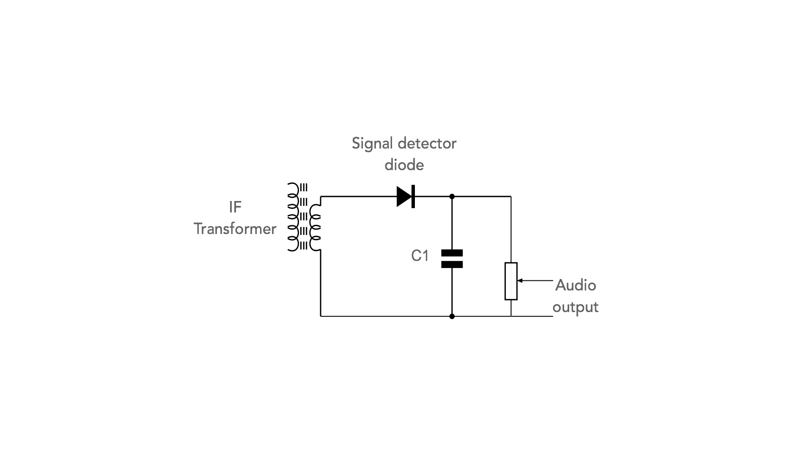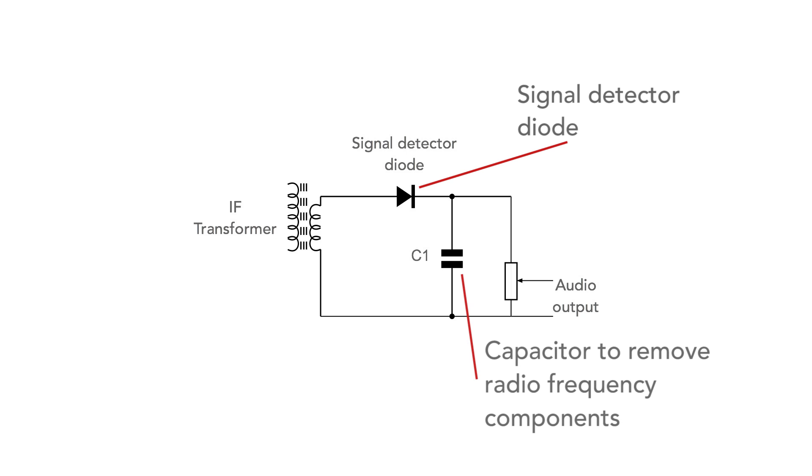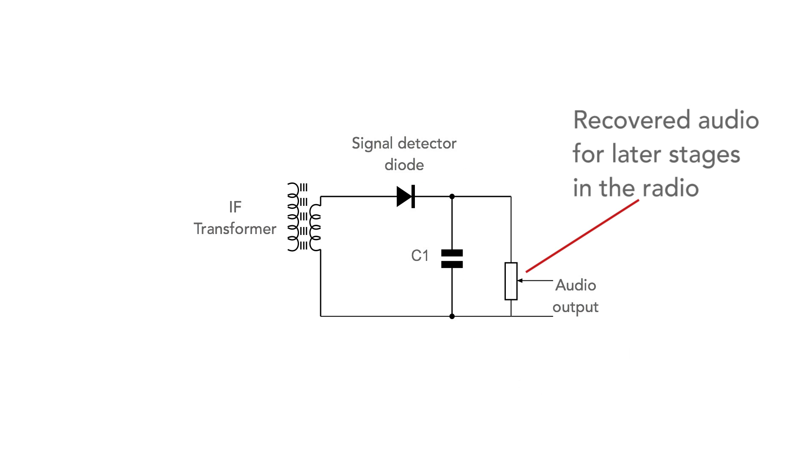An example of a simple diode detector is seen here. The signal from the previous stages of the radio is applied to the diode. A capacitor is present to remove the unwanted RF elements and then this is applied directly to the volume control and the audio stages.